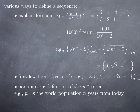Another way to define a sequence would be by specifying what the nth term is without giving it an explicit value. For instance, you could consider the sequence pₙ where the nth term is the world population n years from today. That is something that makes sense to consider, but where we don't necessarily know the explicit numerical value of pₙ.